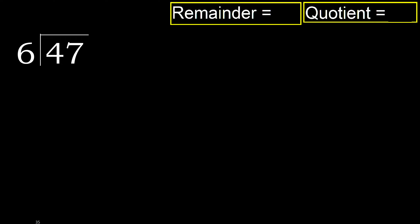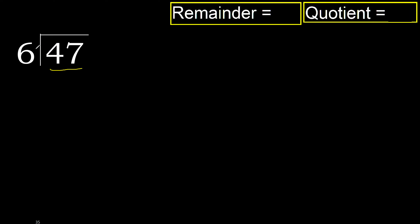47 divided by 6. 4 is less, therefore next. 47 is not less, therefore with 47. 6 multiplied by which number is nearest to 47?